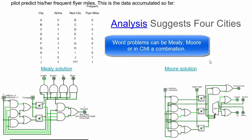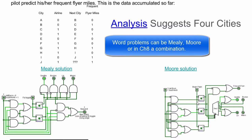This is just example one. I tried to do example two, which the book focused on more, and I created a word problem for that Moore solution. Then I had to make all sorts of assumptions to get a Mealy solution, and the Mealy solution looks even more ridiculous — it looks more disconnected from the reality of the Moore solution.